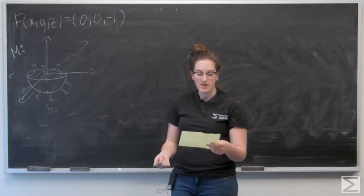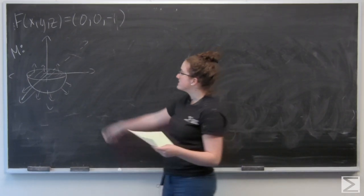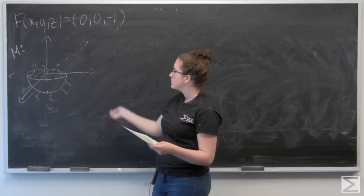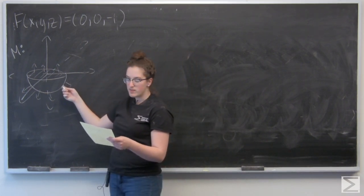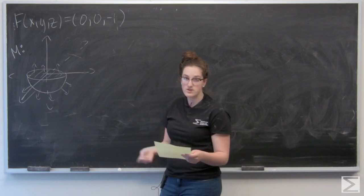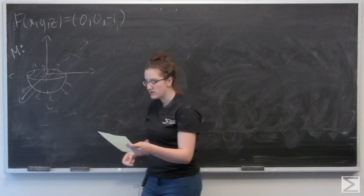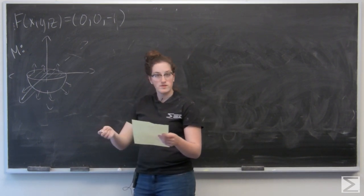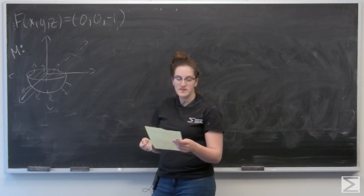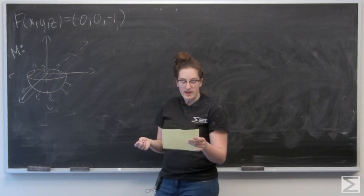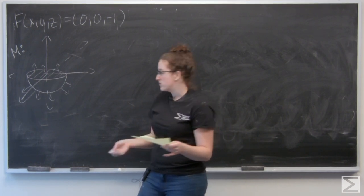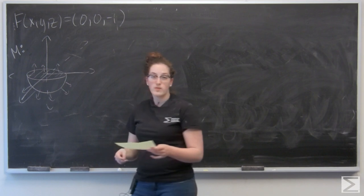For this problem, I'm asked to calculate the flux of the given vector field F through the surface M, which is the bottom hemisphere of the sphere of radius three centered at the origin with a disk on top closing it, oriented outward. I have two pieces of M that I need to calculate the flux through: the disk on top and the hemisphere on the bottom.